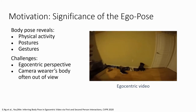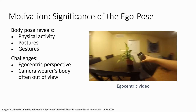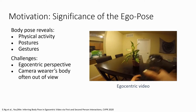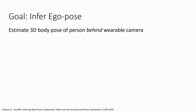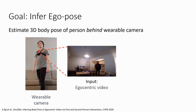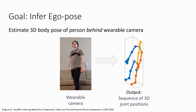Yet ego pose estimation is particularly challenging due to extensive occlusions and motion blur that often accompany an egocentric perspective. More importantly, the person of interest is often completely out of view of the camera. This brings us to our goal, which is to use egocentric video captured by a wearable camera to infer the body pose of the camera wearer who happens to be behind the camera, and hence unseen.